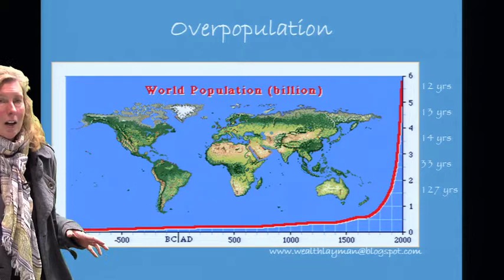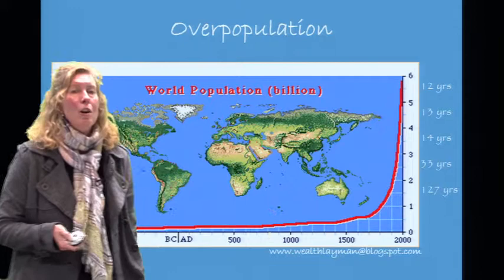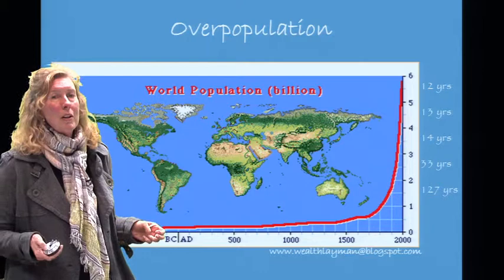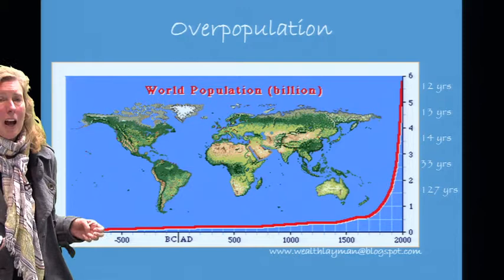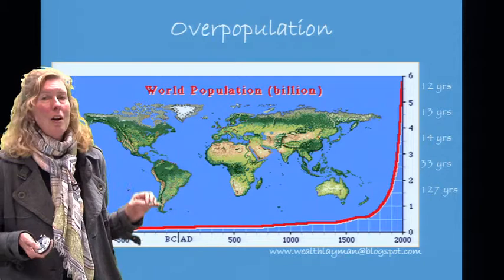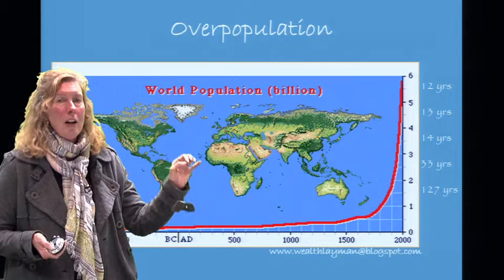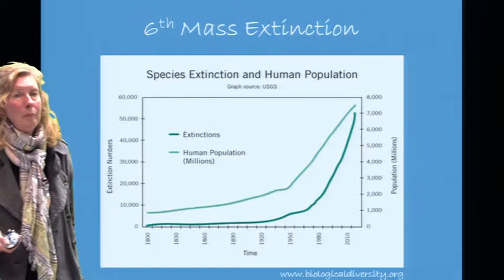With exponential growth, because of limited resources, we will eventually hit a ceiling — a carrying capacity — and at that point we will experience a population crash. Notice also just how rapidly we keep adding billions of humans on the planet: first it took 127 years, then 33, then 14, then 13, then 12.